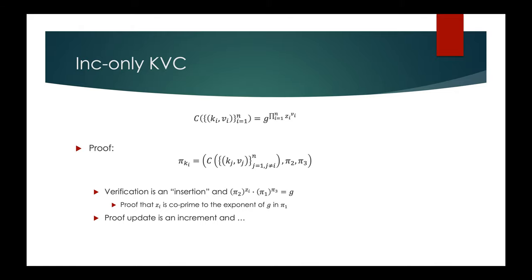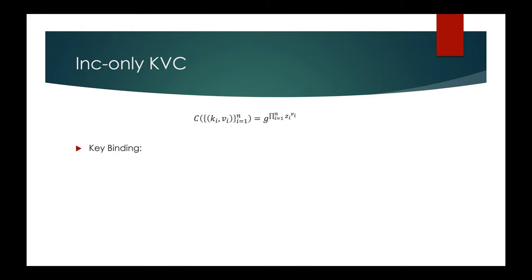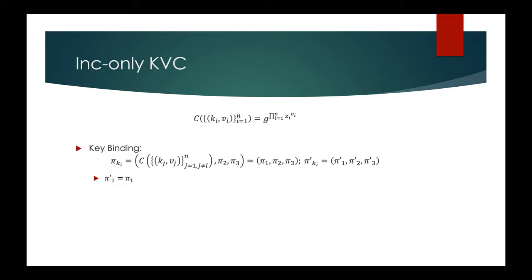Correctness of the increment-only construction follows by inspection. Formally proving key binding turns out to be a more involved exercise. Using techniques from before we can show that the first components have to be the same, but completing the full proof involves a few more steps — notably a cute step showing that Bezout coefficients of coprime numbers are themselves coprime. It's a very nice proof, and this construction is key binding based on the RSA assumption.